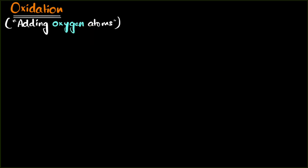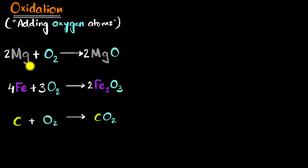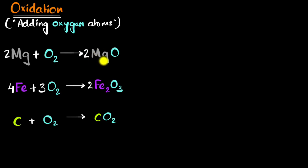For example, take a look at these reactions. In this first reaction, oxygen is getting added to magnesium. Therefore, we say magnesium is being oxidized or magnesium is undergoing oxidation. Remember, oxygen is diatomic in nature — that's why there's an O₂ over here.